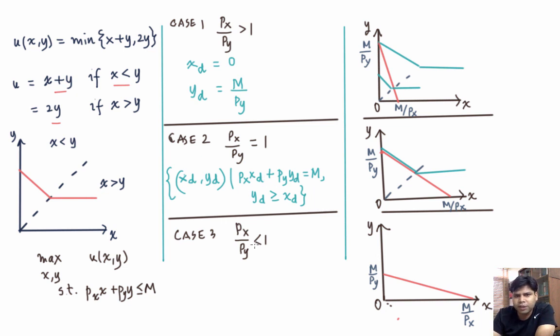In the case when px by py is less than 1, then the solution will be this point that lies on the 45 degree line as well as on the budget line. So the solution can be obtained by solving two equations for two unknowns, and those equations are one is a budget equation and the other is a 45 degree line equation.